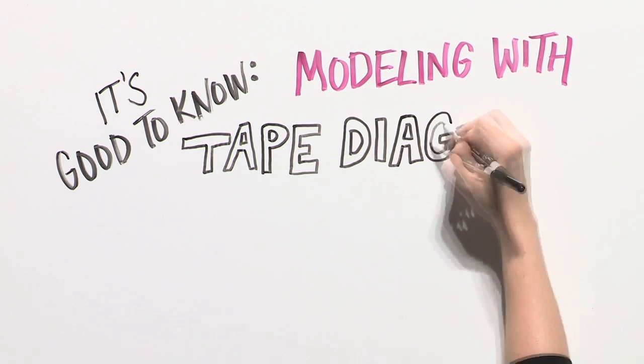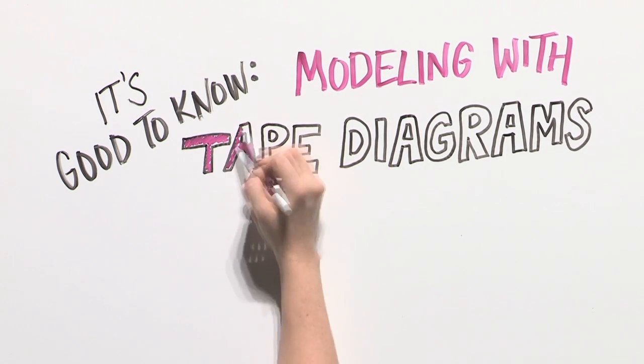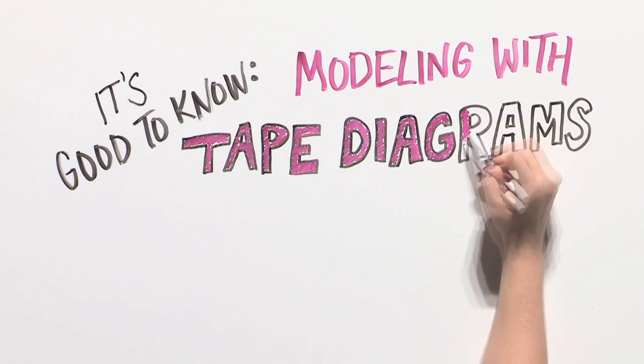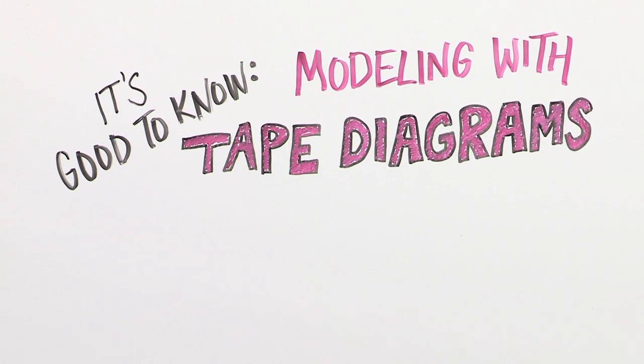Tape diagrams are another visual strategy your child will learn to show addition and subtraction. If this strategy works well for your child, encourage her to use it when solving story problems.